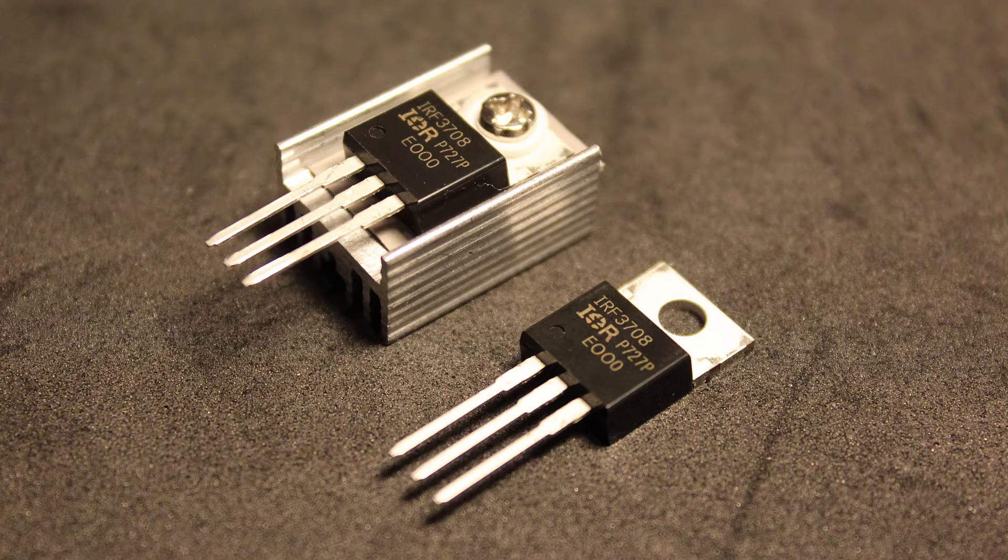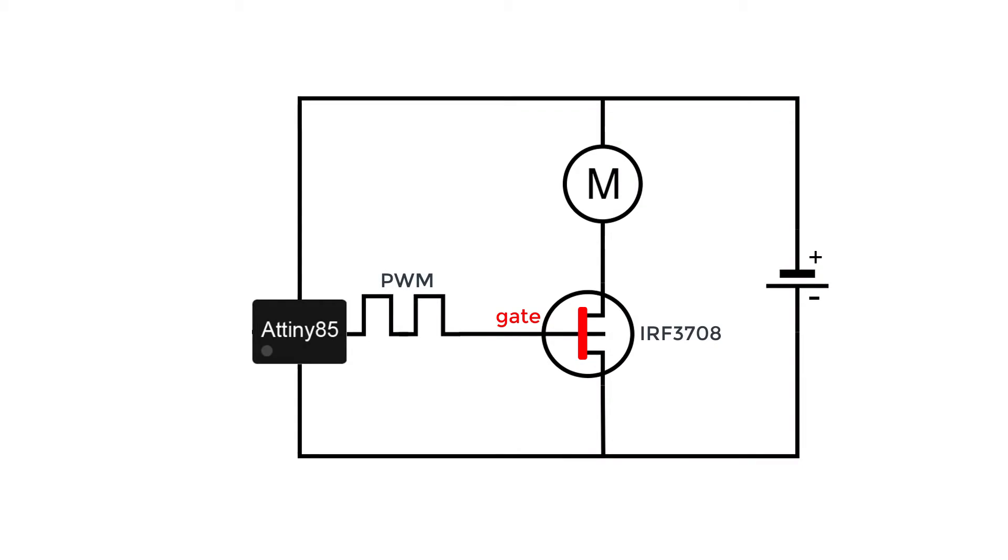The MOSFET that I'm using is the IRF3708. You can use any MOSFET but you have to make sure it is a logic level MOSFET, otherwise you're not gonna have a good time like I initially did. To actually control the speed of the PWM signal, which is referred to as the duty cycle, we will use a potentiometer connected to the ATtiny85. Using an analog to digital converter pin on the ATtiny, we can convert the voltage output of the pot into a digital value which we can then use to control the PWM speed. I use a 10k ohm potentiometer.